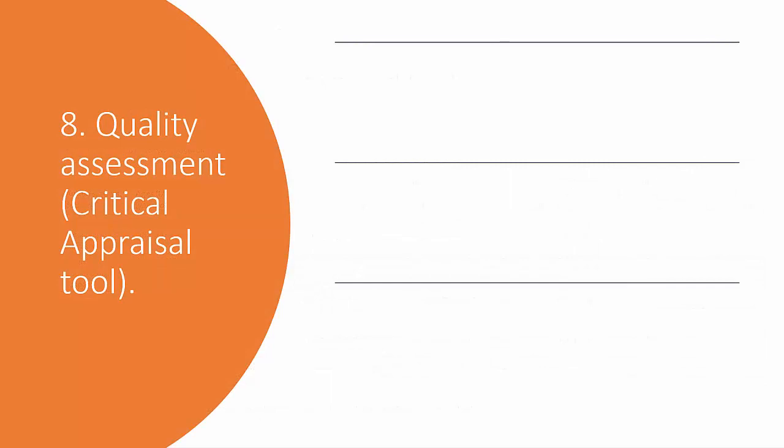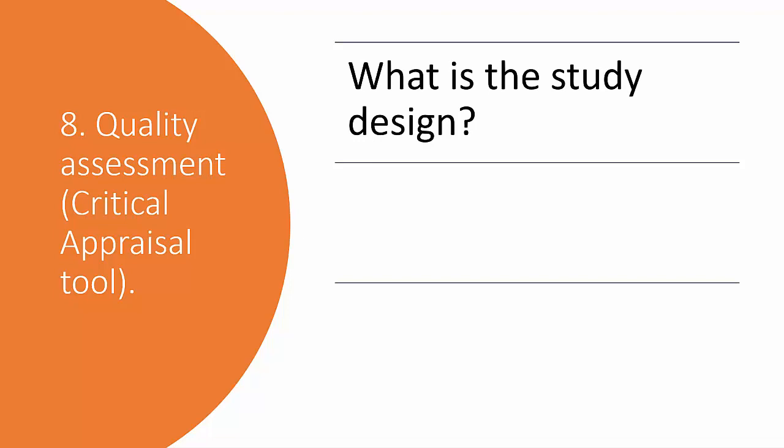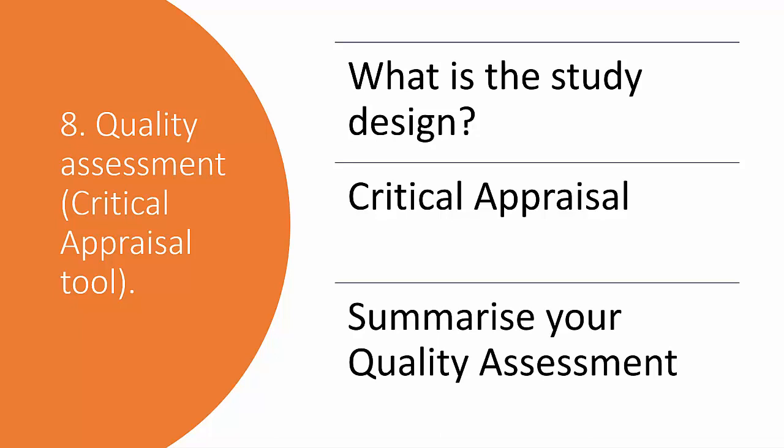Step eight is, in my opinion, the big one: the critical assessment of your papers. For each paper you should first identify the study design — was it an RCT, a cohort study, a case-control study, etc.? Ensure that you select the best or most appropriate critical appraisal tool to suit your review. You must carry out a careful and systematic quality assessment using your chosen appraisal tool for each paper, using this to judge the strengths and weaknesses. Then you will tabulate and summarize your quality assessment.